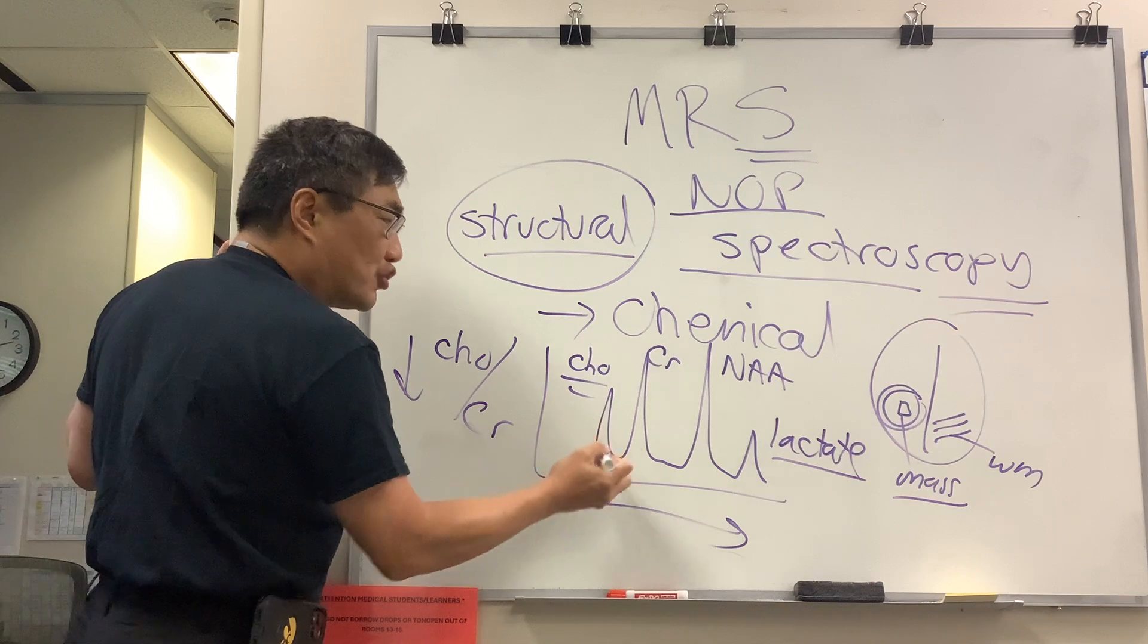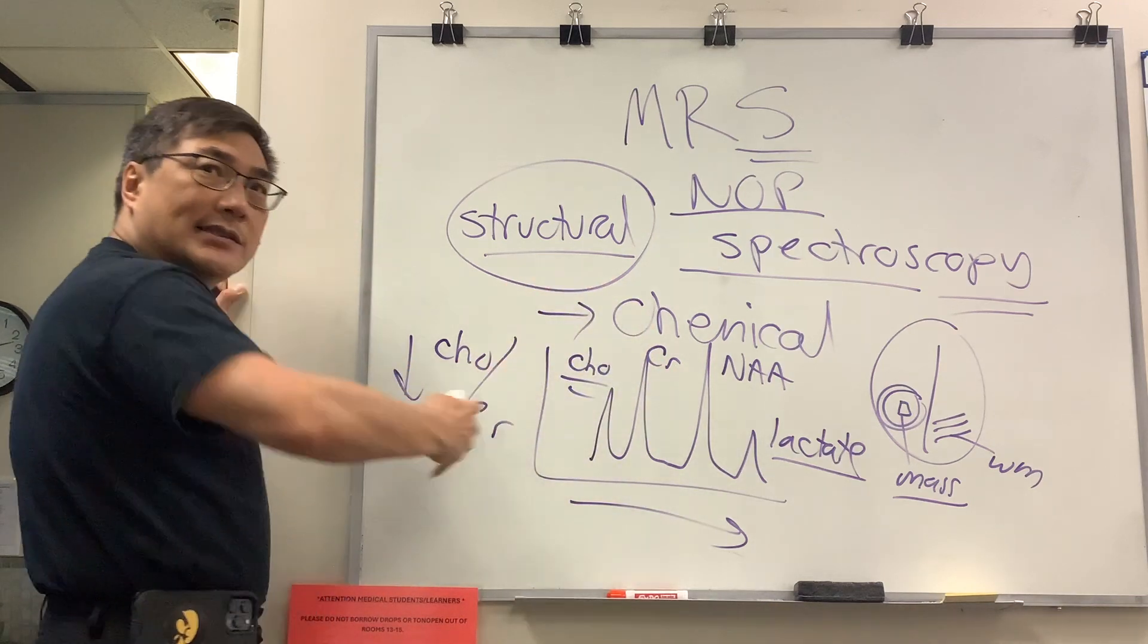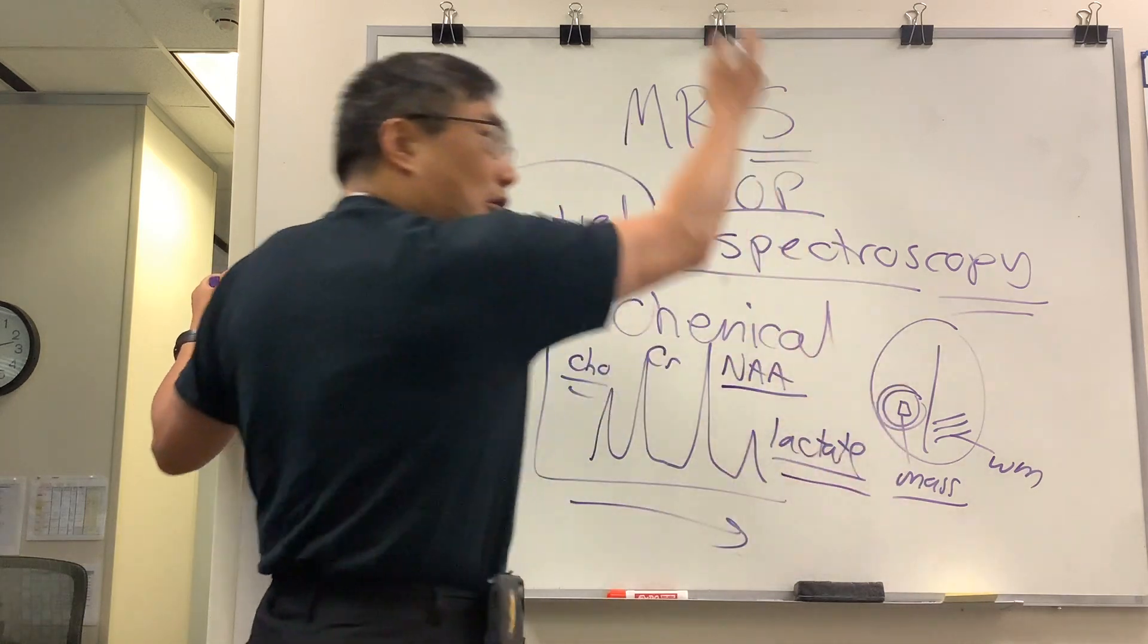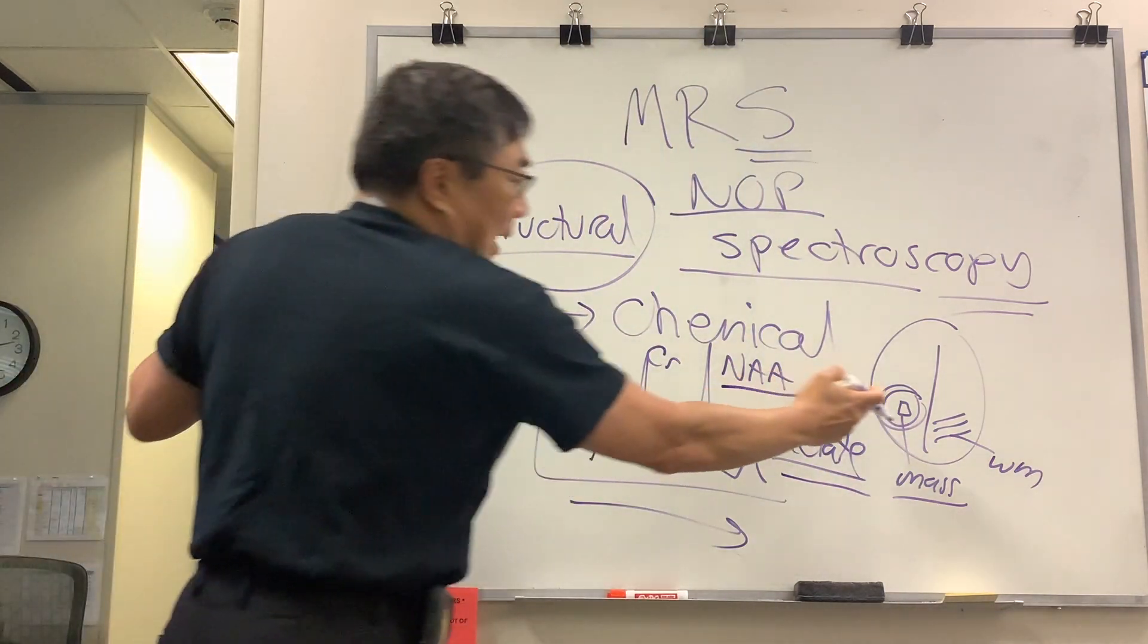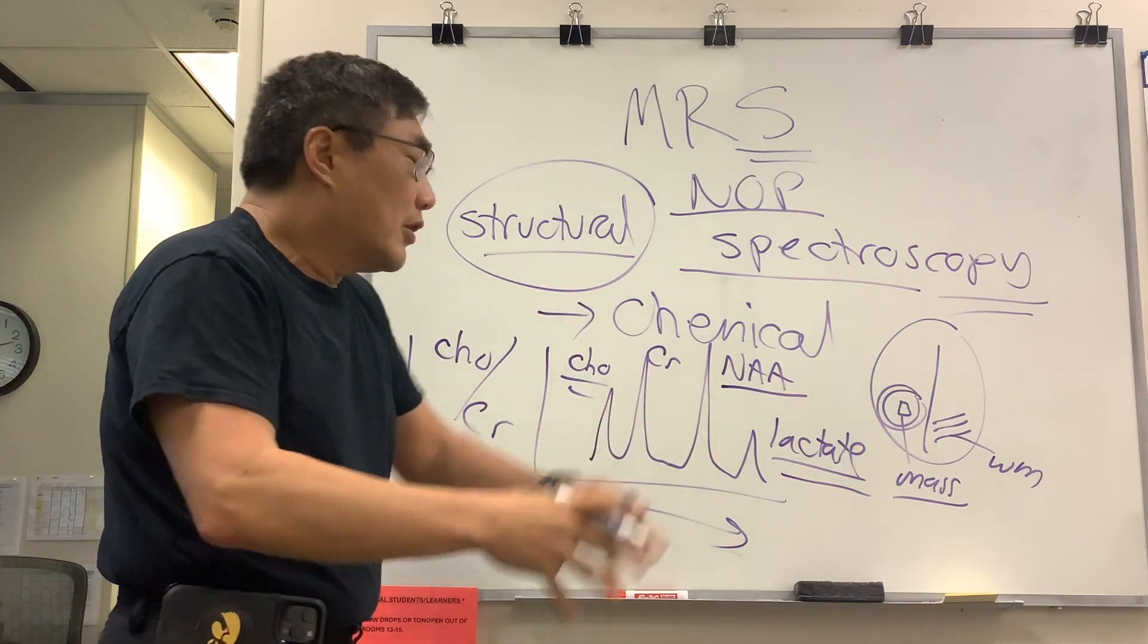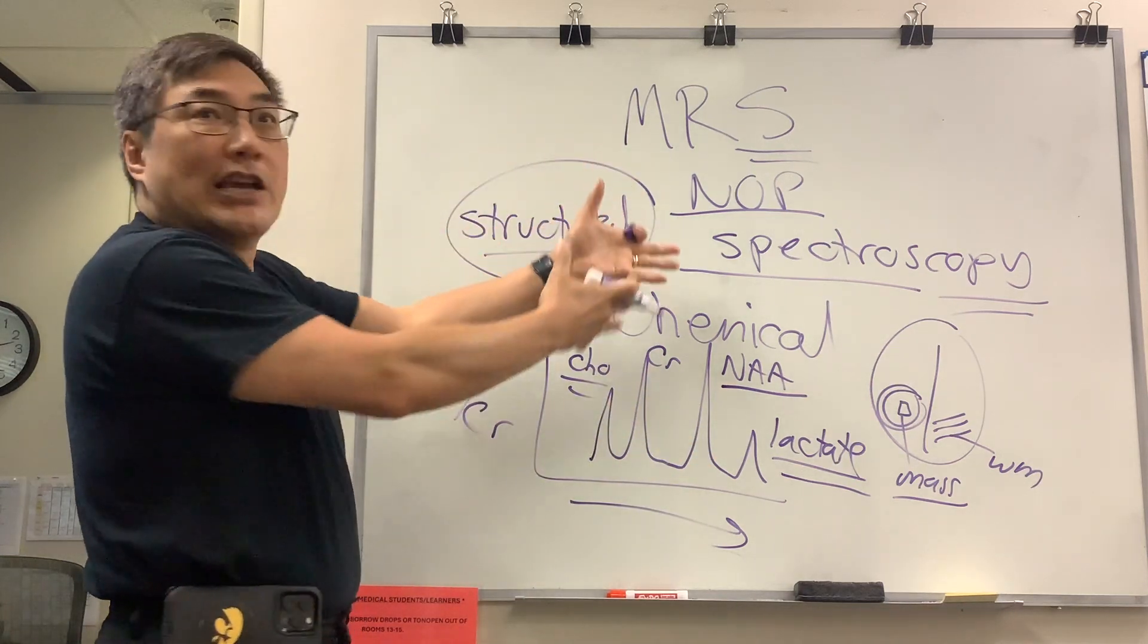So if you've got something that is destroying membranes and releasing a lot of choline, killing your neuron, and is anaerobically active, then that might suggest that that is necrotic tissue inside of a tumor, rather than radiation necrosis.